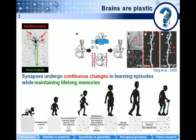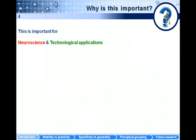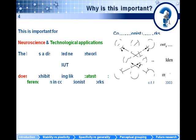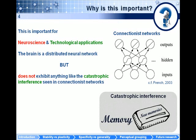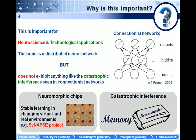This is a very important problem not only for neuroscience — understanding how these memories are generated and maintained — but also for technological applications. A lot of effort has been put in the past 20 years to capture the architecture and functionality of a distributed system based on brain mechanisms. But the problem is that the brain does not exhibit anything like catastrophic interference, which is seen widely in this type of architecture. Catastrophic interference is a phenomenon through which the incorporation of new memory cancels or degrades progressively memory that has already been stored. Solving this problem is also important for realizing smarter chips that can learn throughout the life of the chip without destroying what they have already learned.